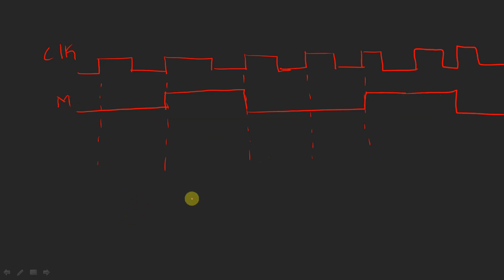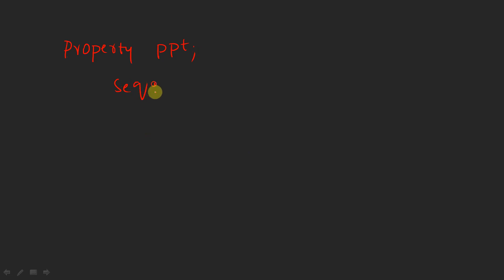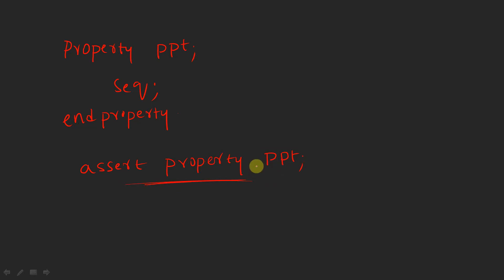Within a sequence I am going to use the `$rose` function. I declare: `sequence scq; @(posedge clock) $rose(m); endsequence`. This sequence is included in a property: `property ppt; scq; endproperty`. For asserting this property I will use: `assert property(ppt);`. This is how the property is asserted.